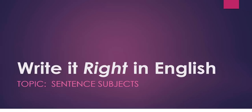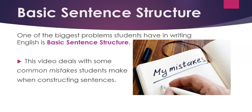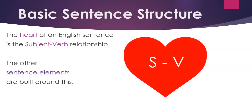Write it Right in English. Topic: sentence subjects. Basic sentence structure. One of the biggest problems students have in writing English is basic sentence structure. This video deals with some common mistakes students make when constructing sentences. The heart of an English sentence is the subject-verb relationship. The other sentence elements are built around this.